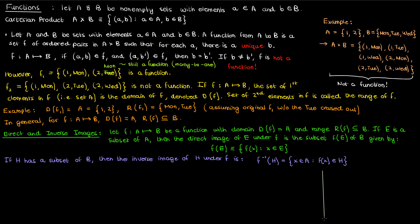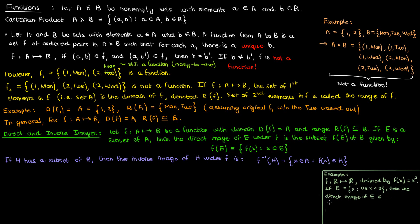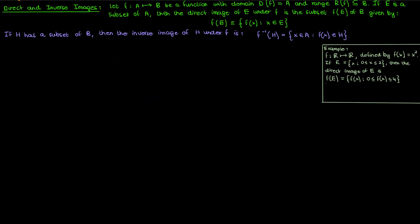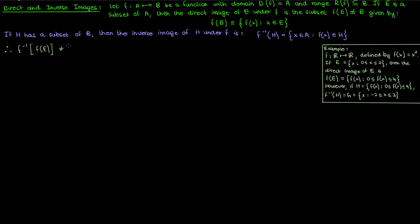This might seem like a lot of abstract terminology, so let me use an example. Say I had a function mapping the real numbers to the real numbers, defined by f(x) = x². If I pick the subset e to be all values of x between 0 and 2, then the direct image of e would be all values of f(e) between 0 and 4 — since 0² = 0 and 2² = 4. However, the inverse image of the set h, which consists of all f(x) between 0 and 4, is a set g consisting of values of x between −2 and 2, because (−2)² = 4 just as 2² = 4. When dealing with real numbers, you must account for both positive and negative roots. As a result, the set g and set e are not the same — the inverse of the direct image of e is not necessarily e.